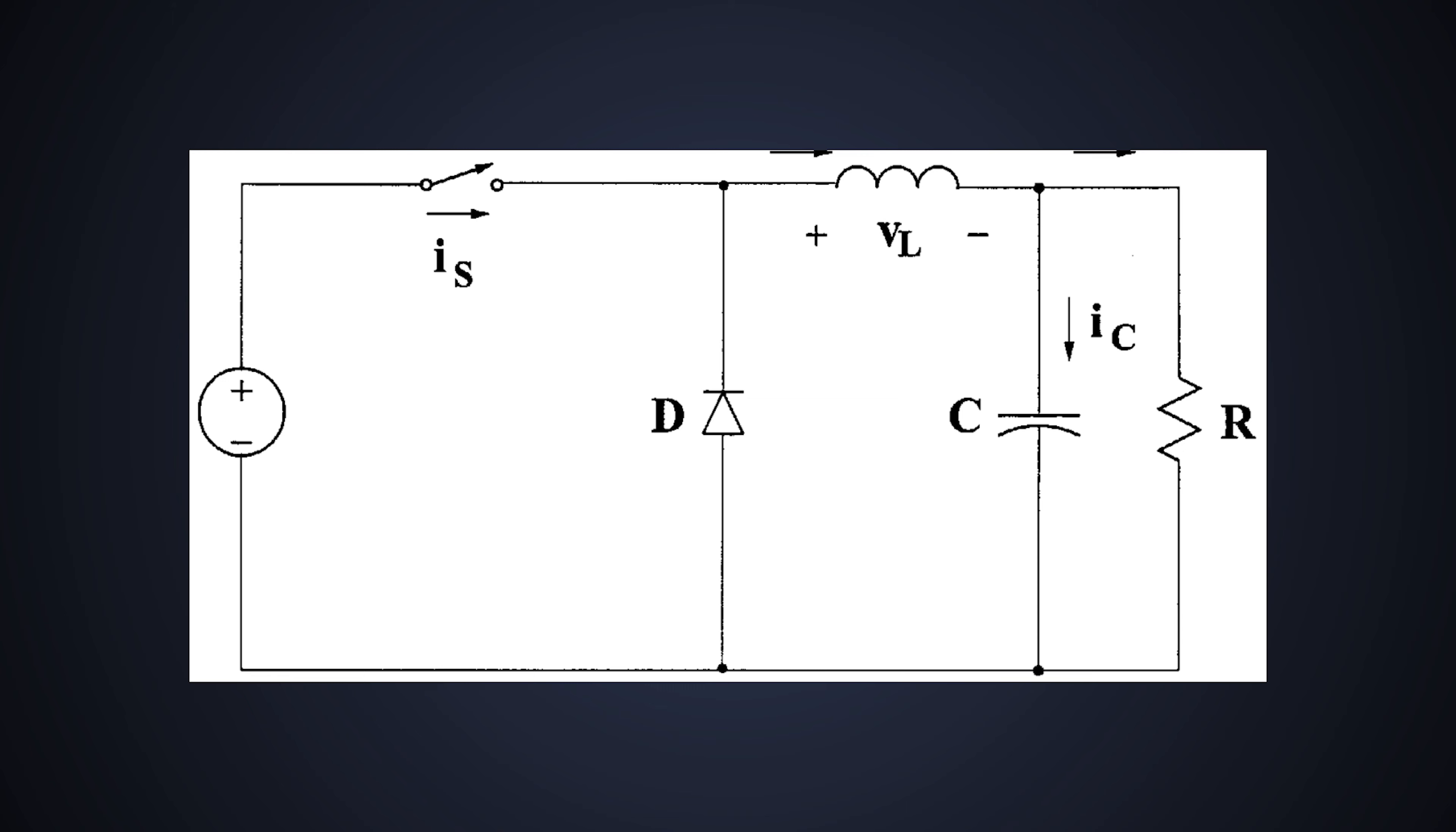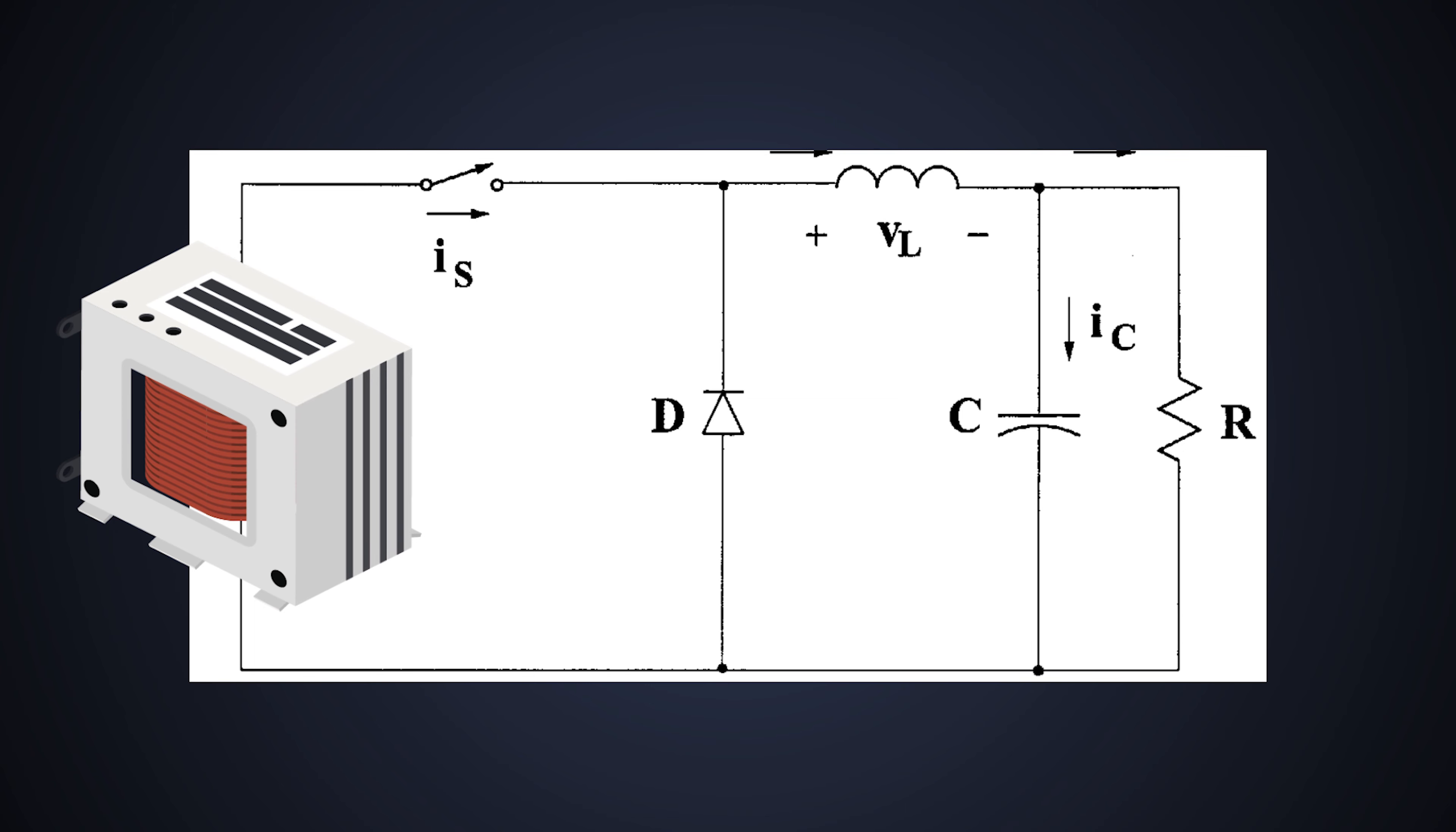Forward converter is basically a buck converter with transformer inserted in between. The forward converter consists of a MOSFET, two diodes, a transformer, inductor and an output capacitor. The construction of the forward converter is like this.